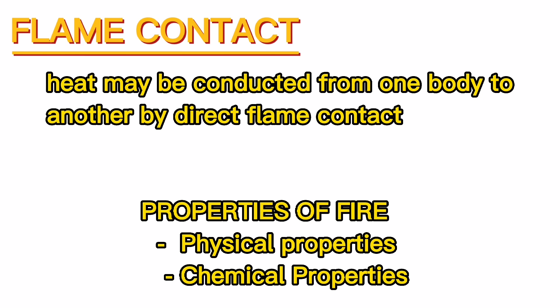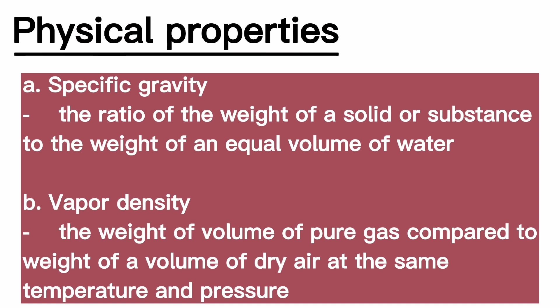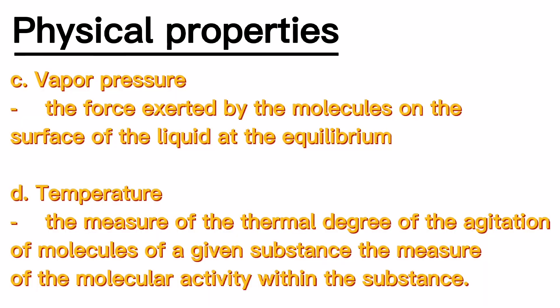Properties of fire — physical properties and chemical properties. Physical properties: A. Specific gravity — the ratio of the weight of a solid or substance to the weight of an equal volume of water. B. Vapor density — the weight of a volume of pure gas compared to the weight of a volume of dry air at the same temperature and pressure. C. Vapor pressure — the force exerted by the molecules on the surface of the liquid at equilibrium. D. Temperature — the measure of the thermal degree of the agitation of molecules of a given substance; the measure of the molecular activity within the substance.